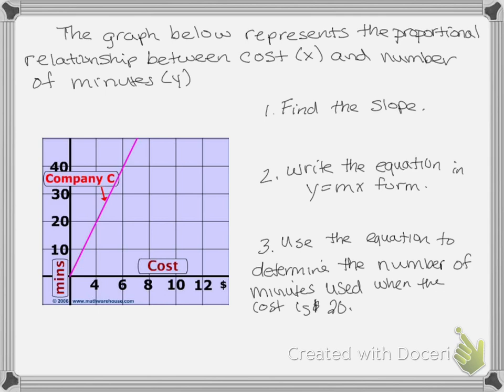Our first example: the graph below represents the proportional relationship between cost x and number of minutes y. When I see a graph, I need to find two points on that graph to help me find my slope. My first point is at (0, 0), and the second point is at (4, 20). I'm going to draw my triangle to show my rise over my run, because that's what I use with a graph.